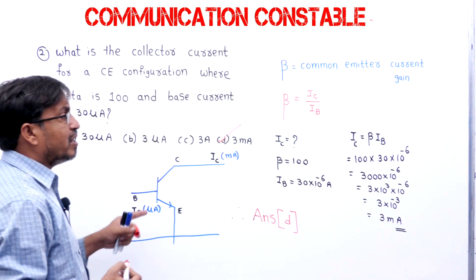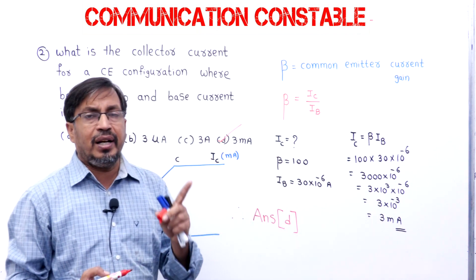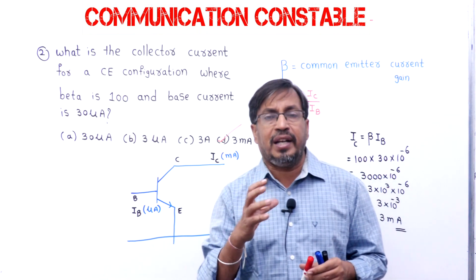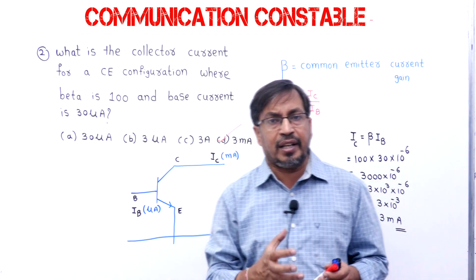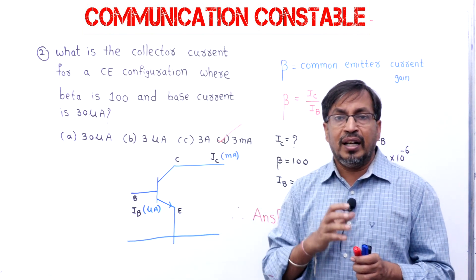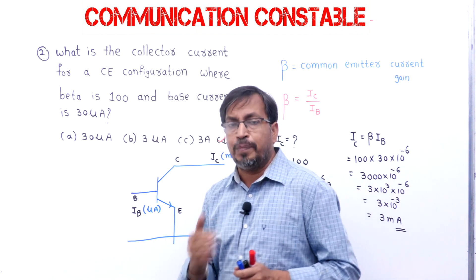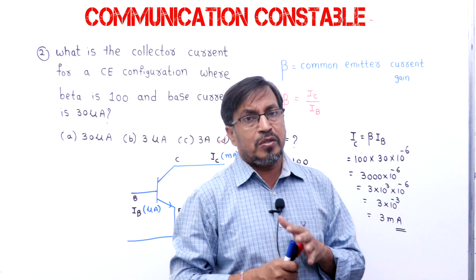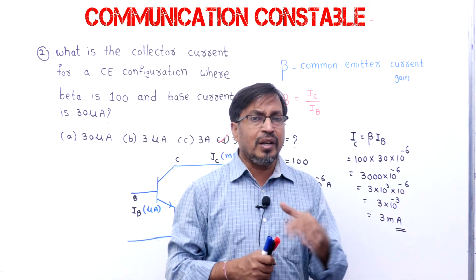The previous question was in terms of alpha (common base current gain) and this question is in terms of beta (common emitter current gain). Remember the formula and units for each configuration. We will build good confidence in this topic and cover every topic in detail in the classroom. We will see the next question now.